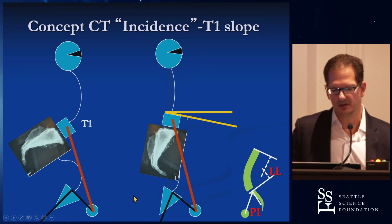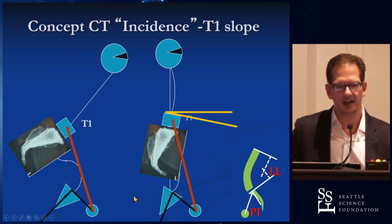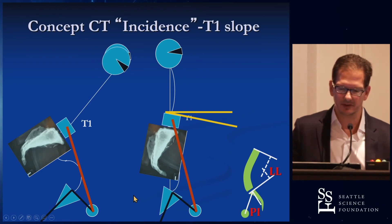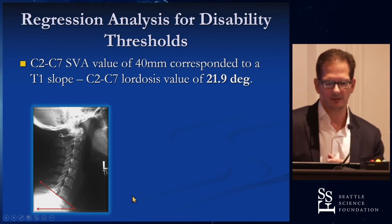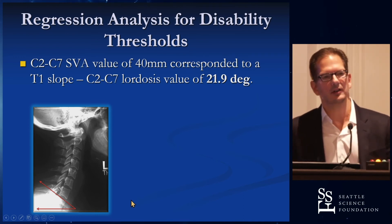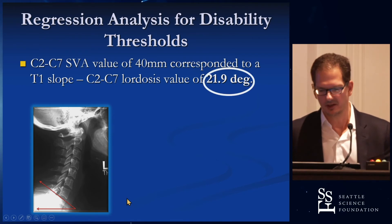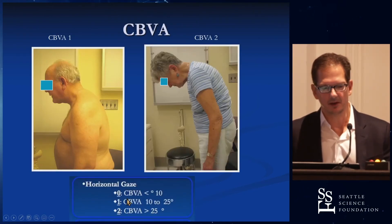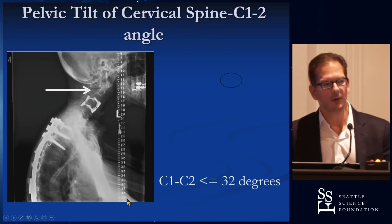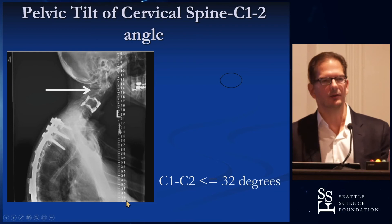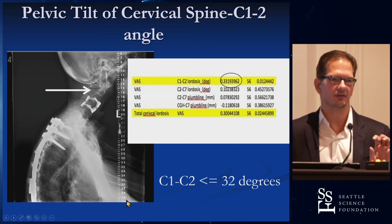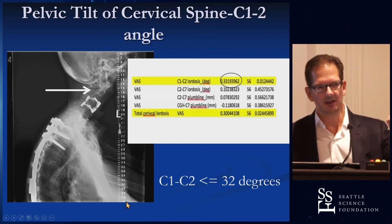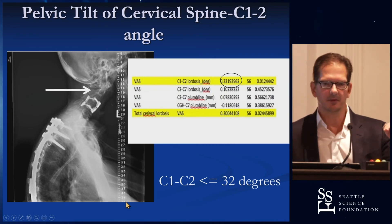A higher T1 slope requires more cervical lordosis to balance the head. If you don't match cervical lordosis to T1 slope, you develop significant cervical sagittal imbalance. We then did a regression to find a PI-LL equivalent in the cervical spine, correlating to moderate-to-severe disability, and found a cutoff value of 22 degrees — the chin-brow vertical angle modifier. We also looked at pelvic tilt and C1-C2 hyperlordosis, finding that patients with more than 32 degrees of cervical lordosis had a significant increase in neck pain scores. When we correct these patients, we want to see relaxation of the C1-C2 level; otherwise, we haven't fully removed their compensation.